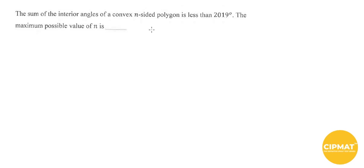This question says the sum of the interior angles of a convex n-sided polygon is less than 2019 degrees, and we need to find out what is the maximum possible value of n. You see this number 2019...